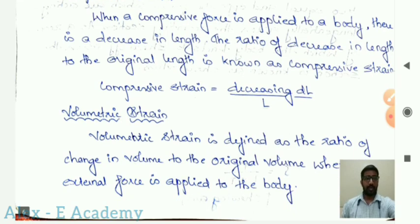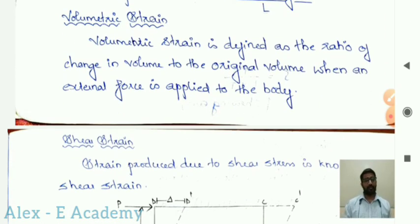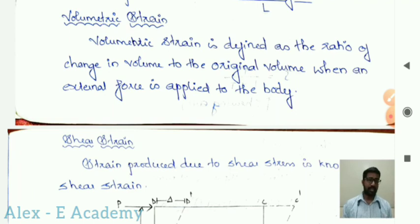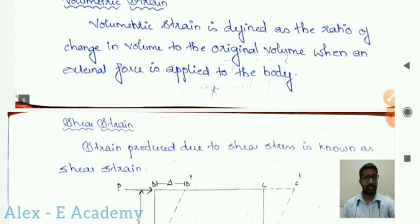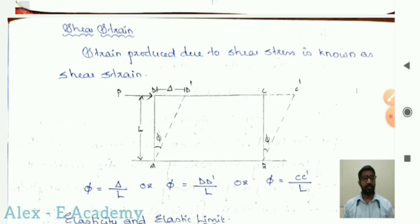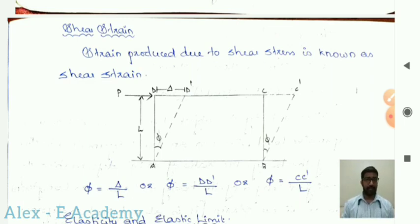Next is volumetric strain, defined as the ratio of change in volume to the original volume when an external force is applied to the body. Next is shear strain. Strain produced due to shear stress is known as shear strain.